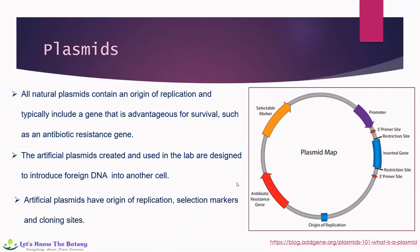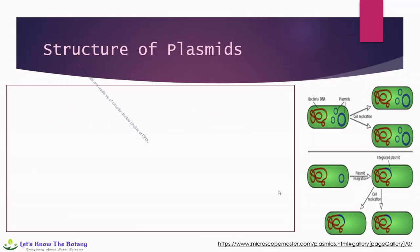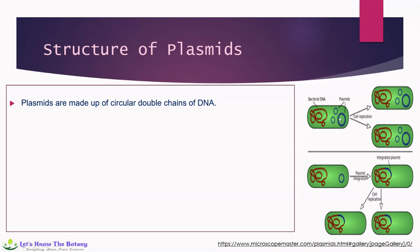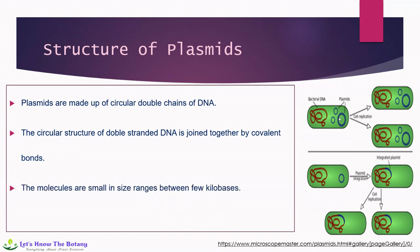Artificial plasmids have an origin of replication, selection marker, and cloning sites. These plasmids are made up of circular double chains of DNA — circular DNA. The circular structure of double-stranded DNA is joined together by covalent bonds. The molecules are small in size, ranging between a few kilobases. Some plasmids have a linear structure and do not form a circular shape.